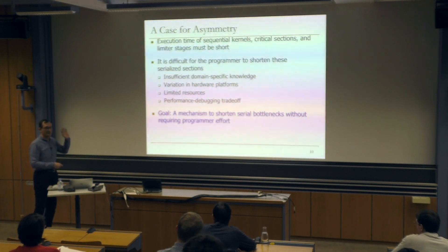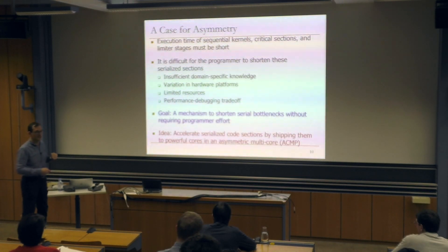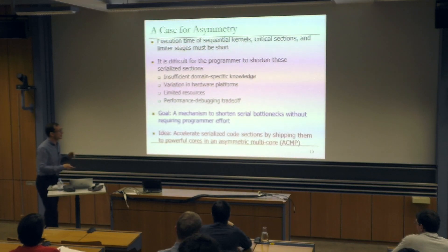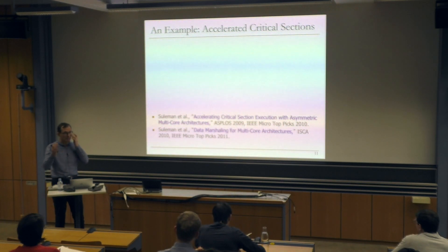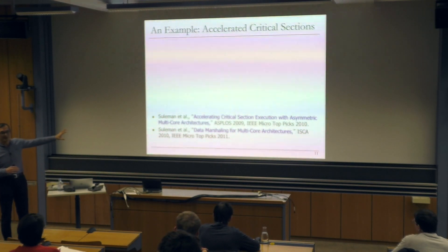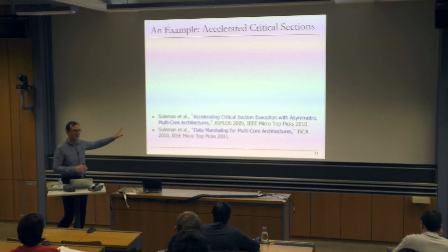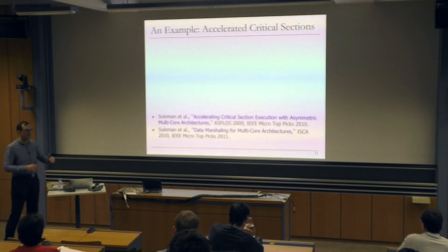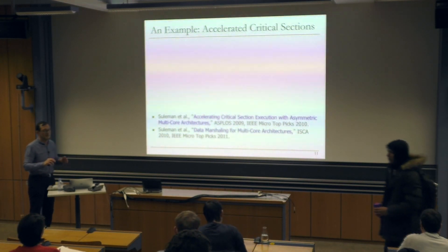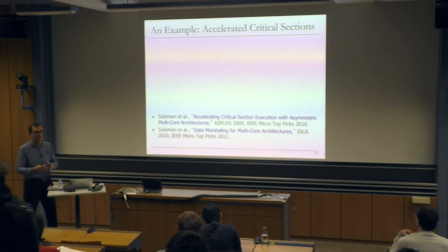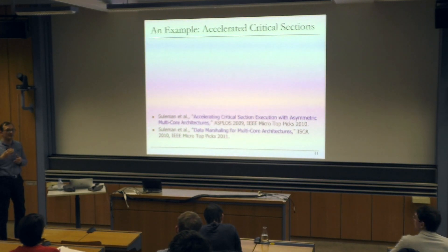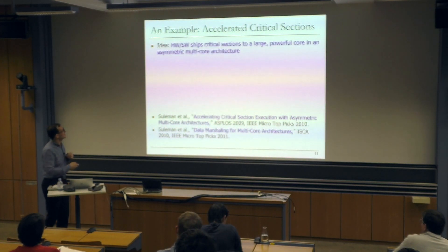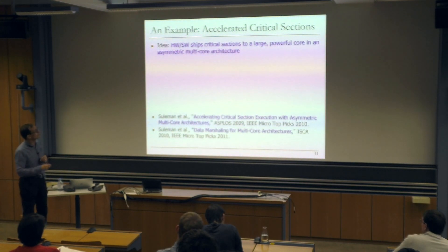The goal is really having a mechanism to shorten the serial bottleneck without requiring programmer effort. The idea is simple: accelerate serialized code sections by shipping them to powerful cores in asymmetric multiprocessors. We're going to describe a software-hardware cooperative solution. You could implement this purely in hardware but it's difficult to identify critical sections that way — at the software level you have information about critical sections, but once it goes to hardware it gets converted into loads and stores. So we communicate richer information from software to hardware.